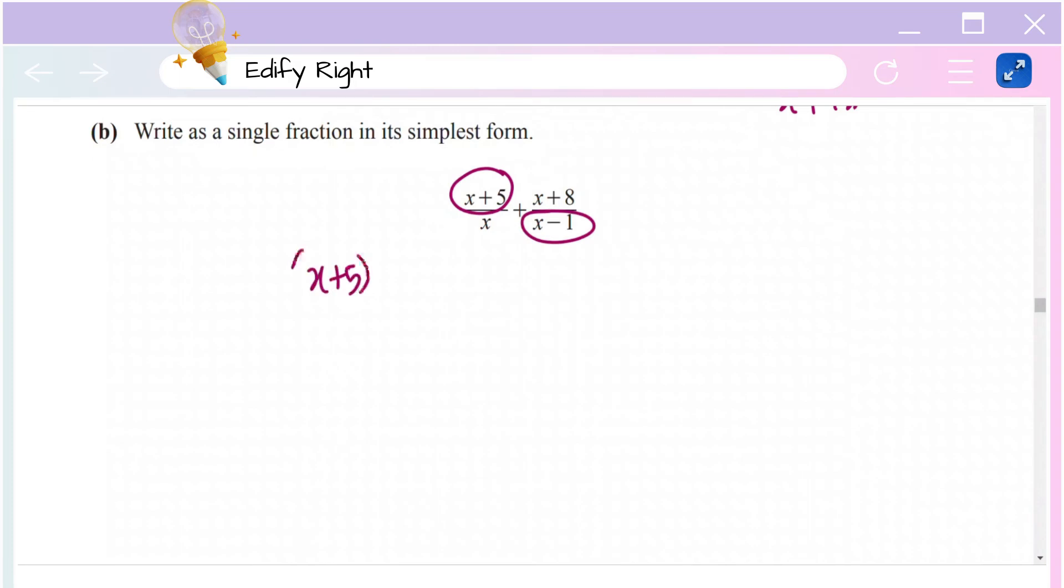That is (x + 5)(x - 1), and you have a plus sign in between. Then cross multiply again: x(x + 8). That's the numerator part. This is how you do it.